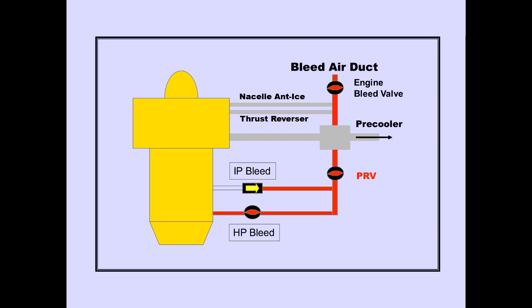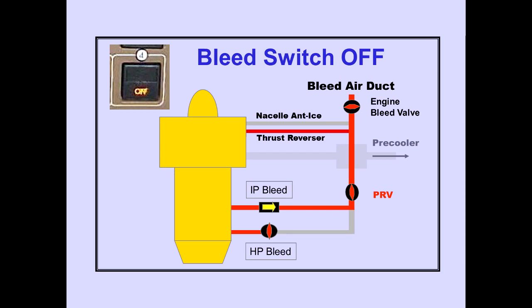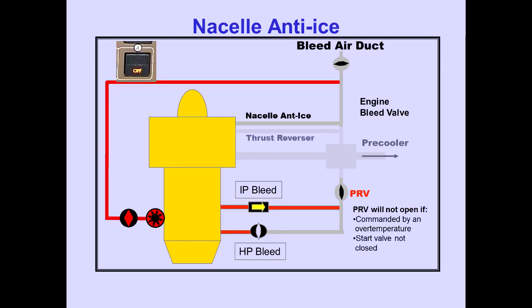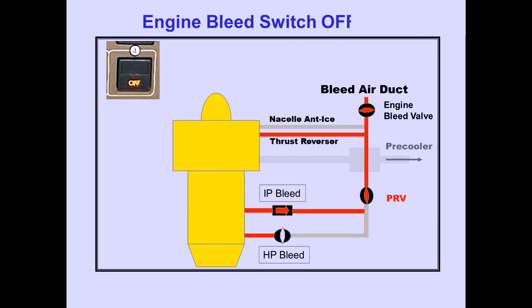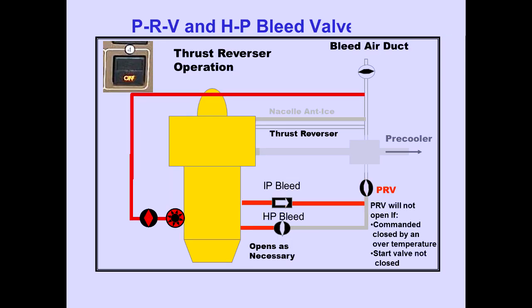Engine bleed air is used for nacelle anti-ice and thrust reverser operation, obtained downstream of the pre-cooler. With the engine bleed switch off, operation of nacelle anti-ice remains available and the PRV will open if the HP bleed valve is closed, unless commanded closed by an over-temperature or if the start valve is not closed. With the engine bleed switch off, operation of the thrust reverser also remains available; the PRV and HP bleed valves will open as necessary, unless closed by an over-temperature or if the start valve is not closed.